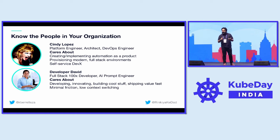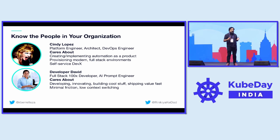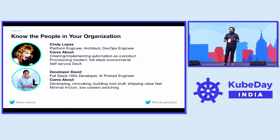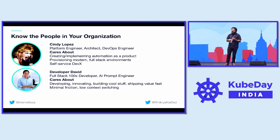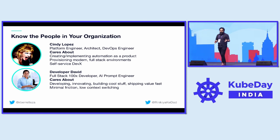One role we call Cindy Lopez, the platform engineer — it can be a DevOps engineer or architect. These people care about automation as a product. They want to make sure their teams can very easily provision modern infrastructure and full-stack environments in a self-service controlled manner. The other persona is what we call developer David, your full-stack developer. They care about building cool apps, want to use the latest technologies, go as fast as possible, have very little friction, and want to focus on the work — sit at their desk, get in the flow, and ship cool things for their users.